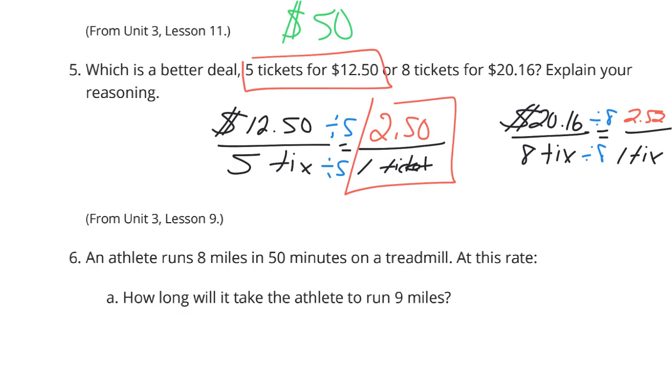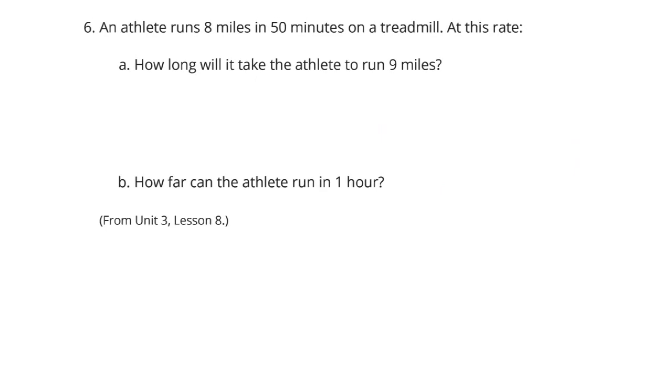Problem six, an athlete runs eight miles in 50 minutes on a treadmill. At this rate, how long will it take the athlete to run nine miles? Let's make a table. We have miles and we have minutes. We know it's eight miles in 50 minutes and we're looking to get to nine miles. And so if we take that middle step of getting this down to one mile, how do we get from eight to one?